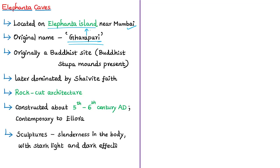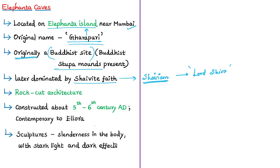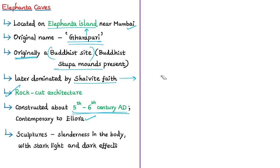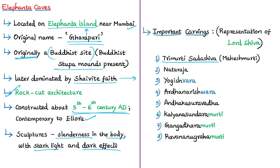The Elephanta Caves were originally a Buddhist site — ancient Buddhist stupa mounds can be seen on the island. Later the island was dominated by Shaivite faith, or Shaivism — the Hindu tradition upholding the belief that Lord Shiva is the lord of the universe and creator of all. As a rock-cut architecture constructed in the 5th to 6th centuries A.D., the Elephanta Caves are contemporary with Ellora. As mentioned by NCERT, the sculptures show slenderness in the body with sharply defined light and dark effects.